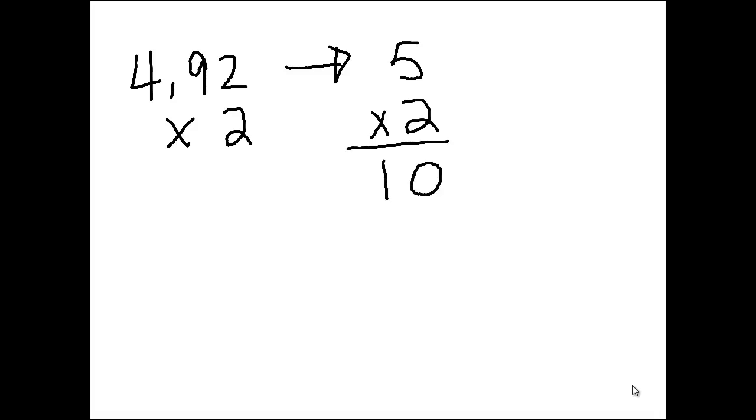So we're going to look at our example problem, and we're going to multiply 4.92 times 2, and we get 984.